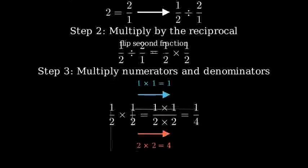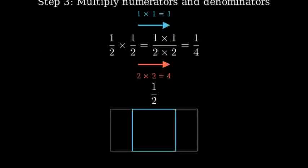Let's visualize what this means. Here's one half, represented by half of a rectangle. When we divide it by two, we're asking how many pieces we get when we split this half into two equal parts. The result is one fourth.